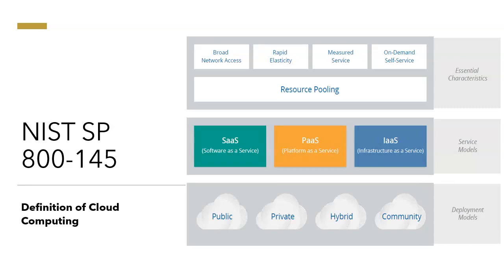The first deployment model is public cloud. In this, the cloud infrastructure is made available to the general public or a large industry group and is owned by an organization that sells cloud services. The hardware, software, facilities, and staff are owned and operated by the service provider, who then sells, leases, or rents services to customers. AWS, Azure, and Google Cloud are examples of this.